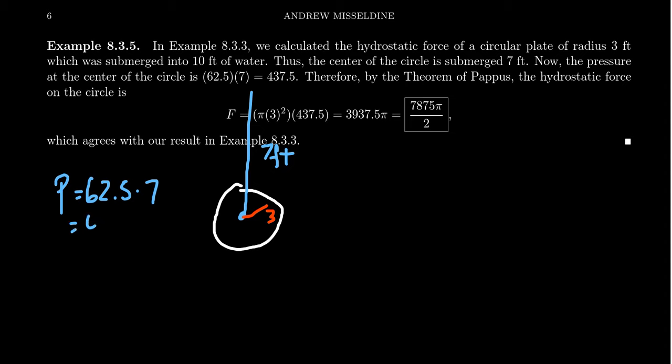And then the area, as it's a circle, the area is going to be pi r squared. That is 9 pi. We can see that if you take 9 pi times 62.5 times 7, that gives you the value we're looking for. And so that's a very slick way of finding the hydrostatic force.